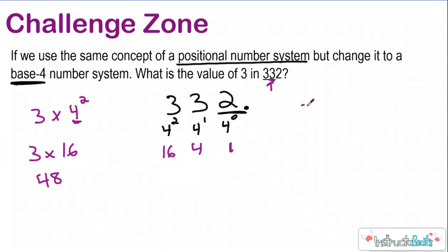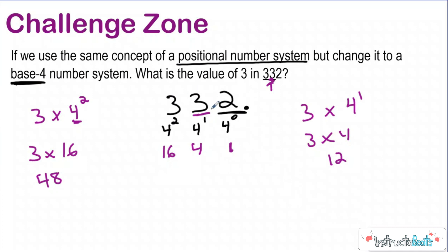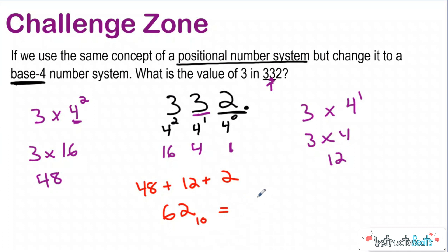Now let's do this three. My digit is three, and I'm multiplying that by a factor of four to the first power because it's in the first position to the left of the ones in the decimal. So that's just three times four, which gives me a value of twelve — so that three is contributing a value of twelve to my overall number. Just for fun: what is the value of 332 if we were talking in base ten? This three had a value of forty-eight, this three had a value of twelve, and then this would just be two ones because it's the ones place. So if we add that together, that has a value of sixty-two. So sixty-two in base ten would actually be equivalent to 332 in base four.